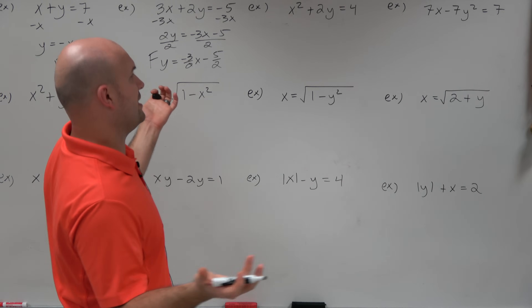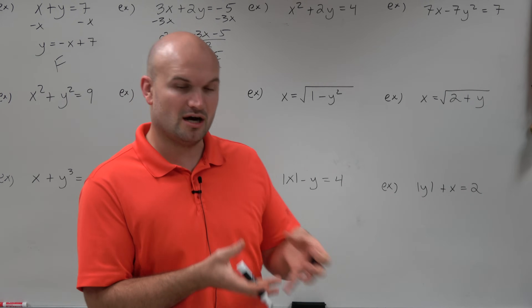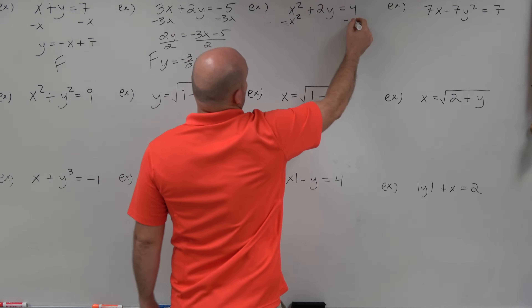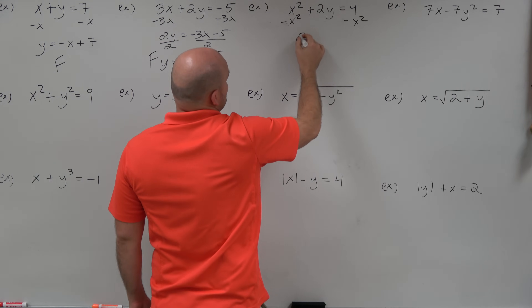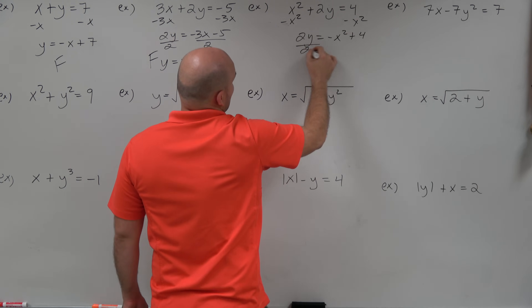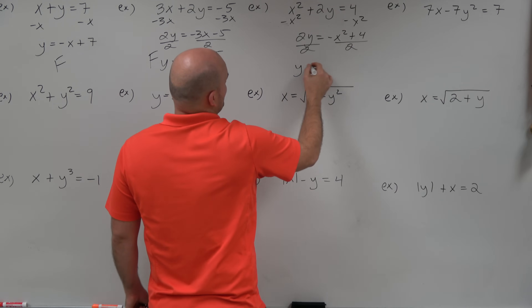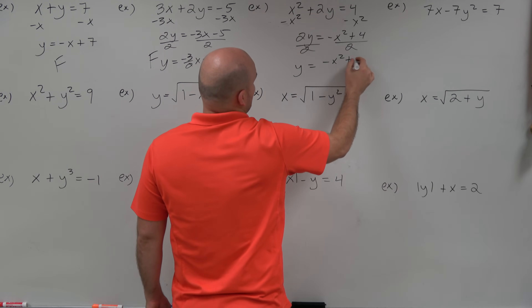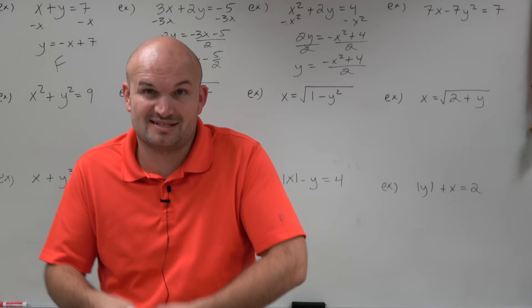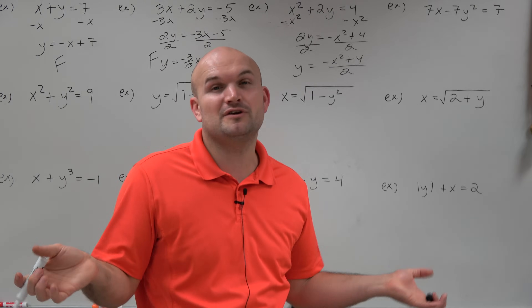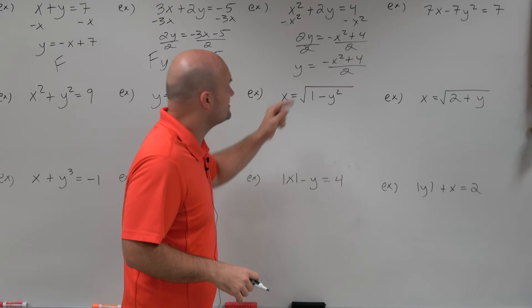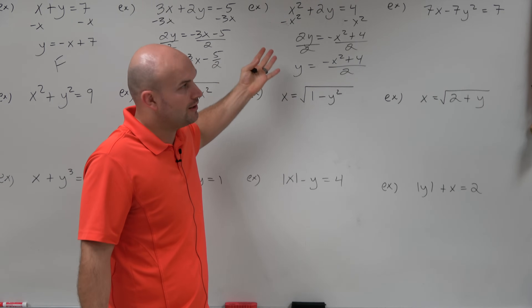Now in this next example, you see an x squared, which is going to start coming into some issues. But in this exact problem, I don't really need to do anything crazy — I can just use my inverse operations. Divide by 2 on both sides. Every single time I plug in a number for x, I'm going to get one unique y. If you're having trouble, just pick some random numbers and plug them in for x — every time you'll get one unique y.